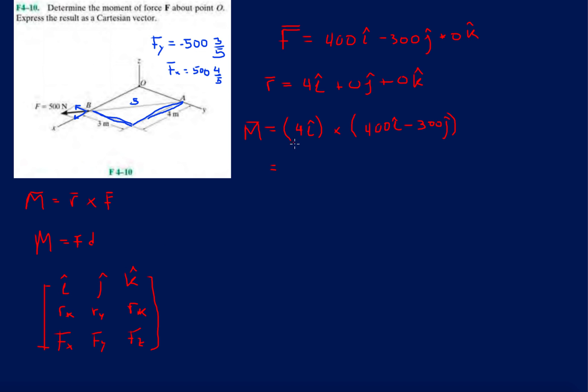Let's do this. Just pretty much FOIL it out, and you'll get better at doing this. So 4 times 400, and now look at your direction: i cross i. I'm not going to say anything about this yet. Now we're going to do 4 times negative 300, and then i cross j.